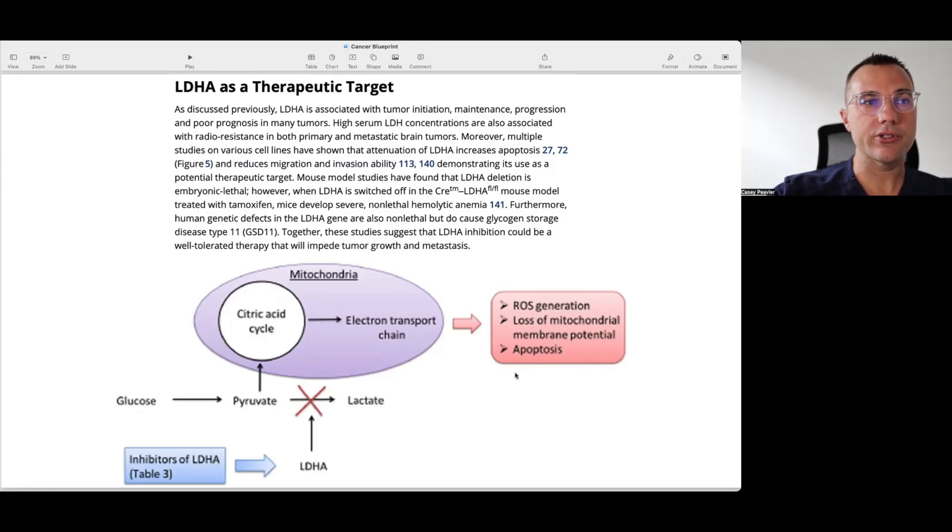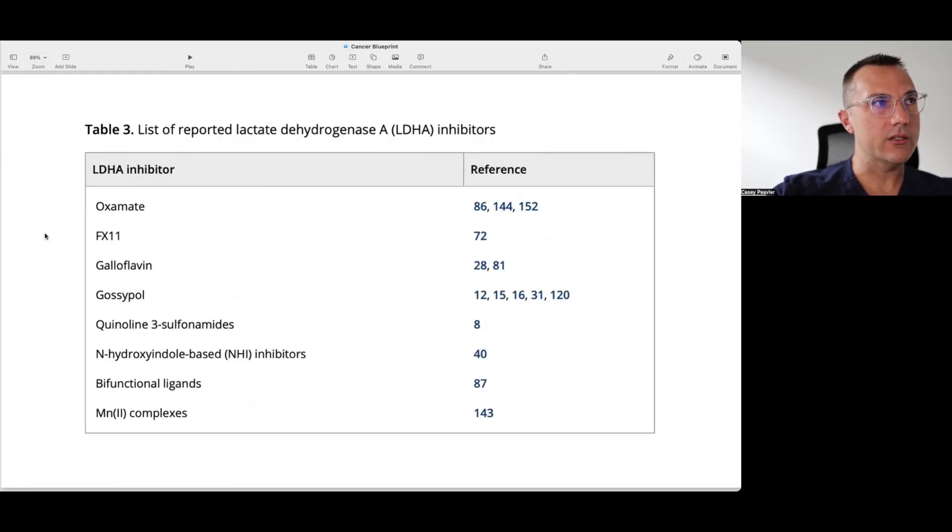So we're left with inhibitors of LDHA seen in table three and this is table three here and in the next video we're going to be talking about a couple of the key drug lactate dehydrogenase inhibitors and some drug lactate dehydrogenase inhibitors that are not on this list that are not well known but that we have talked about before in the past. If you like videos like this please share and subscribe until next time.